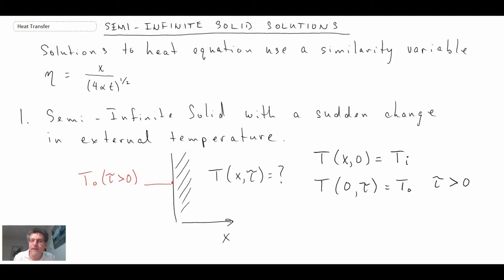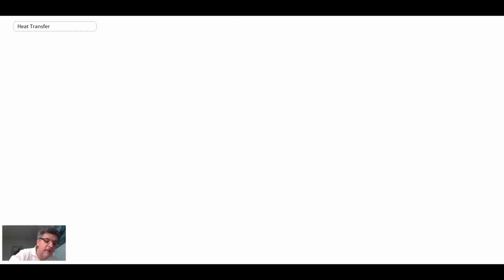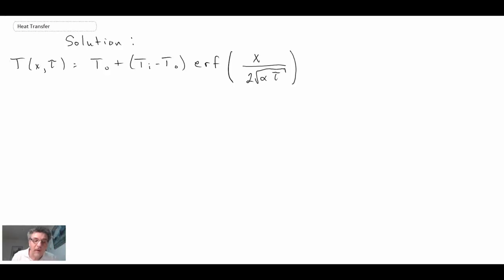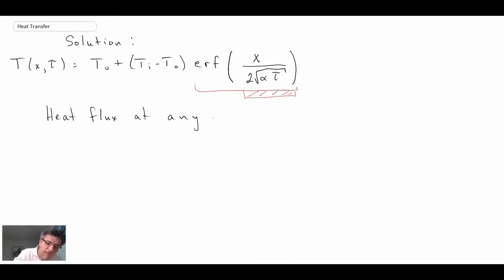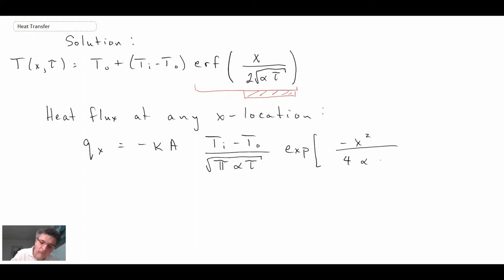We're not going to go through the similarity solution derivation here — you can find it in any heat transfer textbook. The final result gives the temperature distribution, which contains an error function. Inside the error function is our similarity variable eta, which is why it appears as x over two square root of alpha tau. The heat flux at any x location in the solid can also be calculated from this solution.